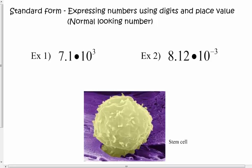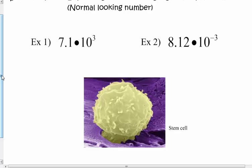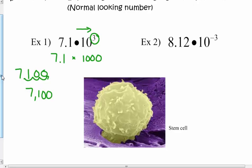Standard form — what if a number is in scientific notation and you want to put it into the normal-looking standard decimal numeral form? We do the opposite and reverse the steps. For a positive power, move the decimal to the right. For example, 7.1 times ten to the third is the same as 7.1 times one thousand. Moving the decimal three places to the right gives seven thousand one hundred as the standard form.